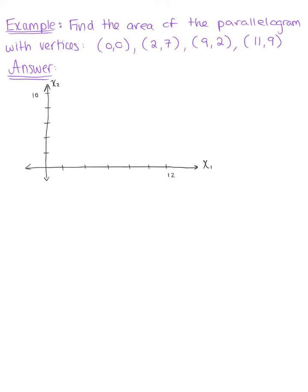Find the area of the parallelogram with vertices at the given points. So we have (0,0), (2,7), (9,2), and (11,9).